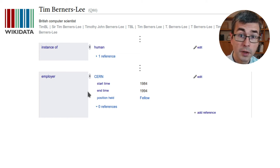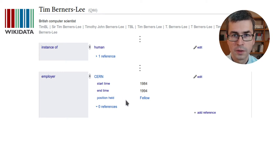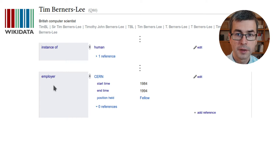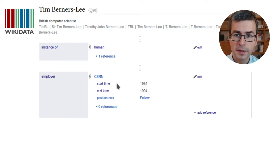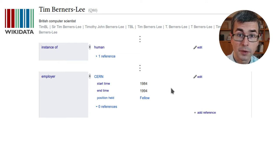When we think of this in terms of a knowledge graph, we have to ask how this fits into the graph-like view. Clearly Tim Berners-Lee is somehow connected to CERN, so there's an edge in the graph. But where does the start time, end time, and position go? Is it somehow internal to the employer relationship? We will discuss that further. For now we will just use this as a document that people can edit — you can add more qualifiers to any statement, change values, or remove them.